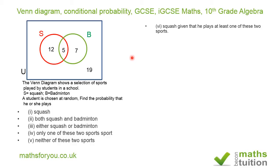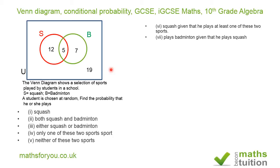In that case, our sample space reduces to what's in the squash and badminton circles combined. For the seventh question: find the probability of playing badminton given that he plays squash — so the sample space is the red squash circle.